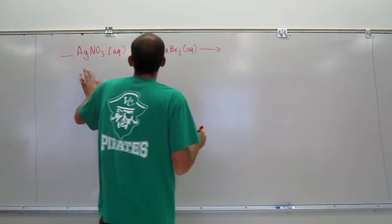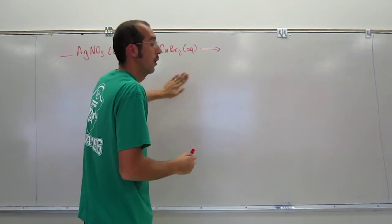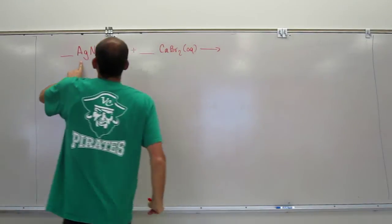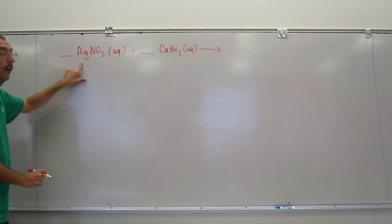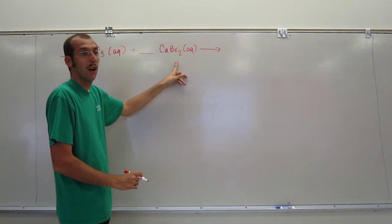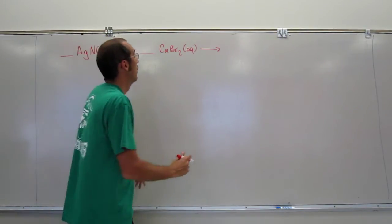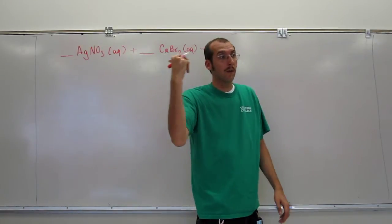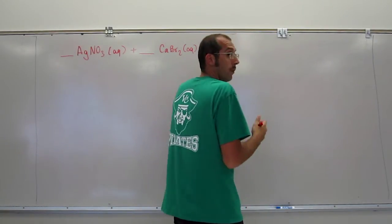And the white precipitate that forms, remember, is going to be silver bromide, but what is this? This is silver 1, right? And bromine, what's its charge? It's negative 1, right?